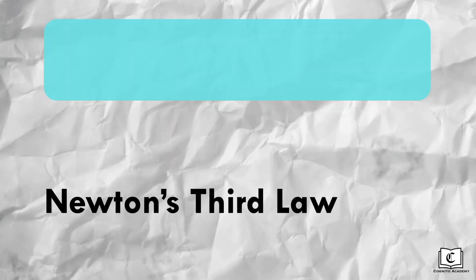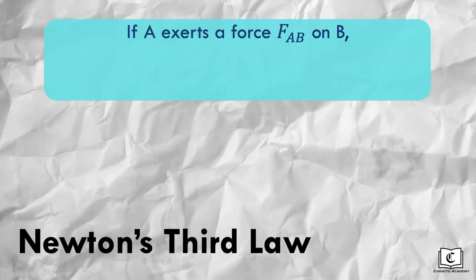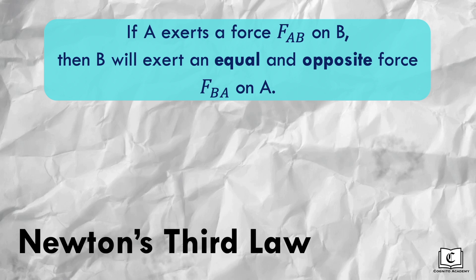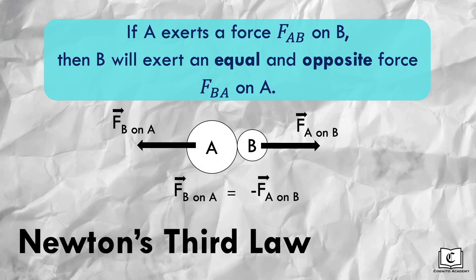Newton's third law of motion states that if body A exerts a force AB on body B, body B will exert an equal and opposite force BA on body A. In layman terms, if the blue ball exerts a force towards the right on the pink ball, the pink ball will also exert an equal and opposite force towards the left back on the blue ball. These two forces are commonly known as action-reaction forces.